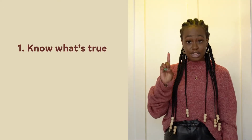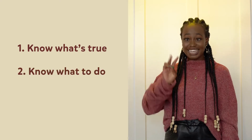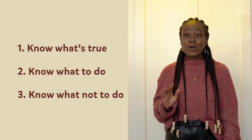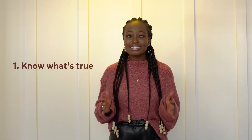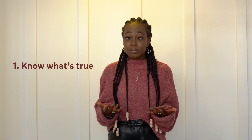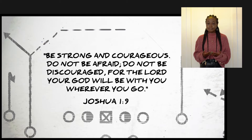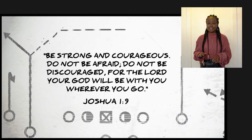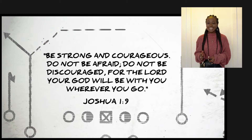Here's a simple way for us to understand what we're reading. When we read the Bible, we can look for one of these three things: the Bible helps you one, know what's true; two, know what to do; and three, know what not to do. Let's look at the first one — know what's true. When we read the Bible, we can read something that's true about God, or maybe we read about a promise from God. Like this verse found in the book of Joshua: 'Be strong and courageous. Do not be afraid, do not be discouraged, for the Lord your God will be with you wherever you go.' Joshua 1:9.